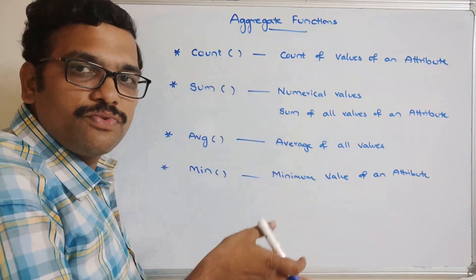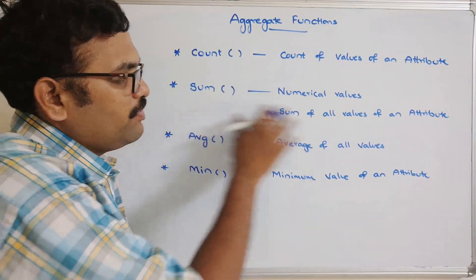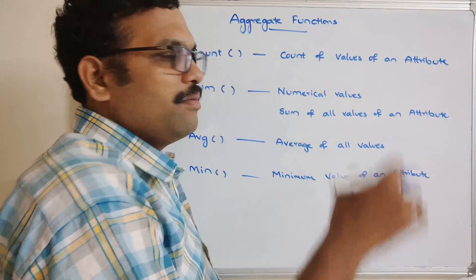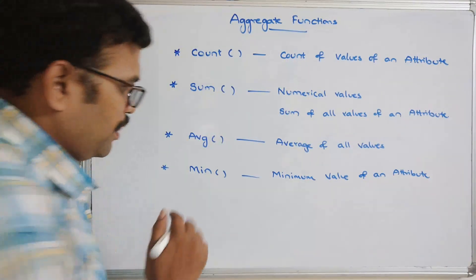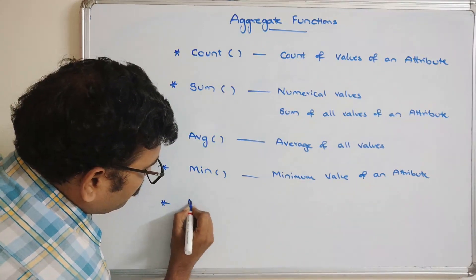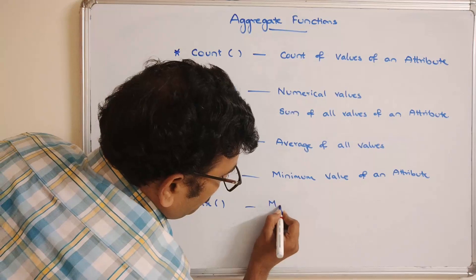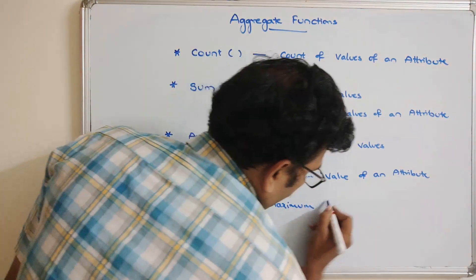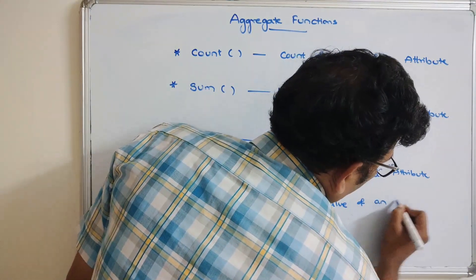Similarly, among all those values it will return the average value, and it will give the sum. This will give the count — the number of values available for that particular column. And similar to MIN, there is one more function called MAXIMUM, which will give the maximum value of an attribute.